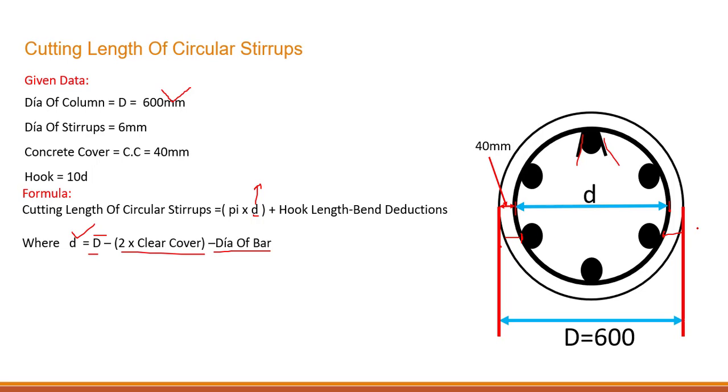So it will make the full dia. So this is the D that we need to find out over here. From external, we need to deduct concrete cover from both ends minus dia of bar.